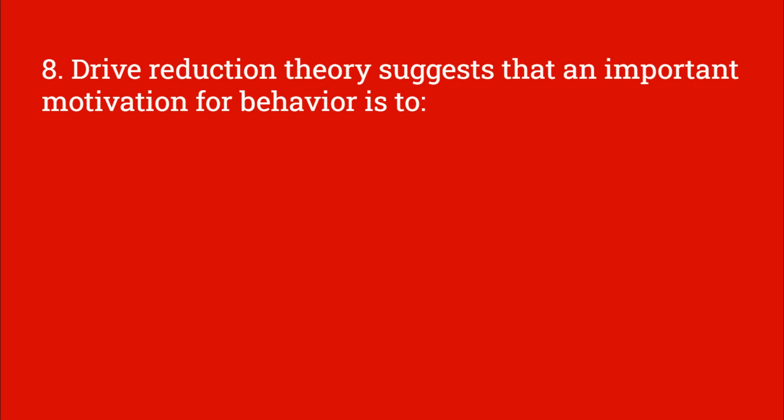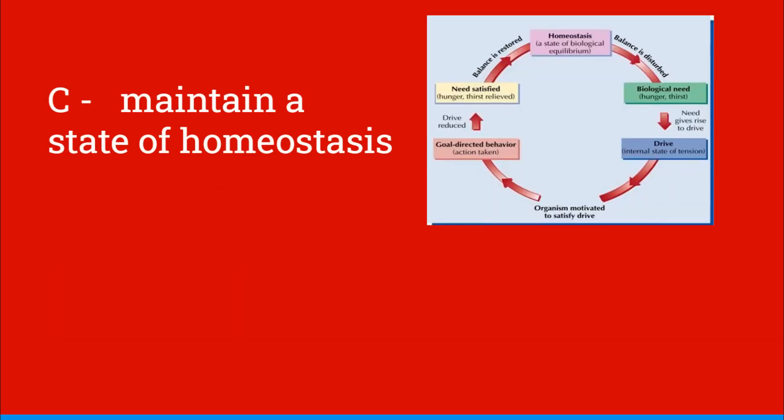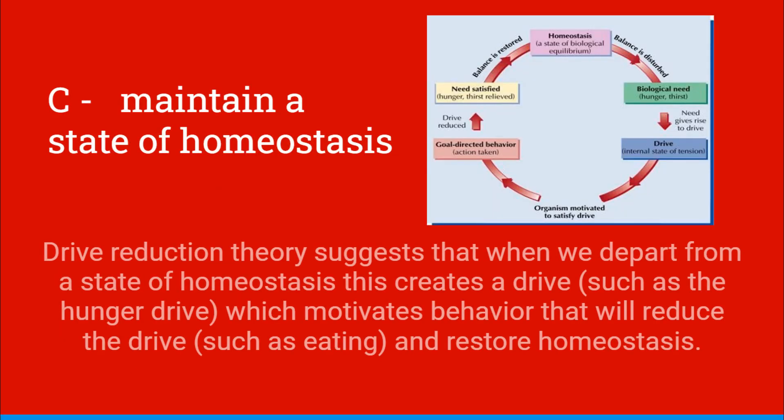Drive reduction theory suggests that an important motivation for behavior is to: increase physiological arousal, balance levels of challenge and skill, maintain a state of homeostasis, avoid negative emotions, or experience a flow state. And this would be C, maintain a state of homeostasis. Drive reduction theory suggests that when we depart from a state of homeostasis, this creates a drive, such as the hunger drive, which motivates behavior that will reduce the drive, such as eating, and thus restore homeostasis.